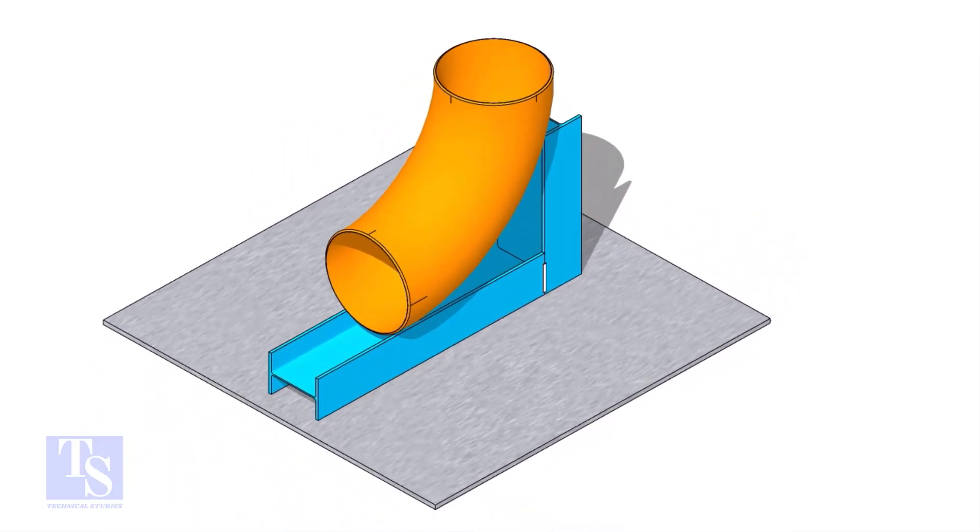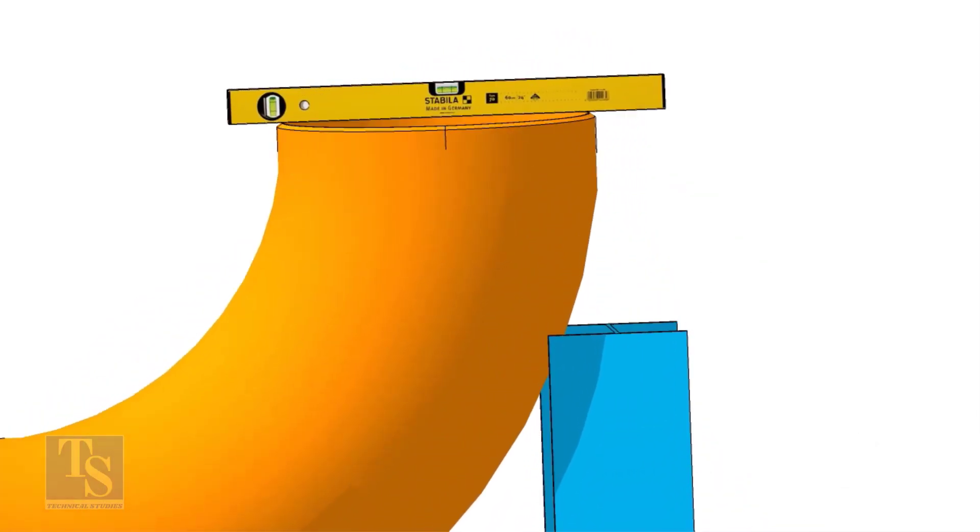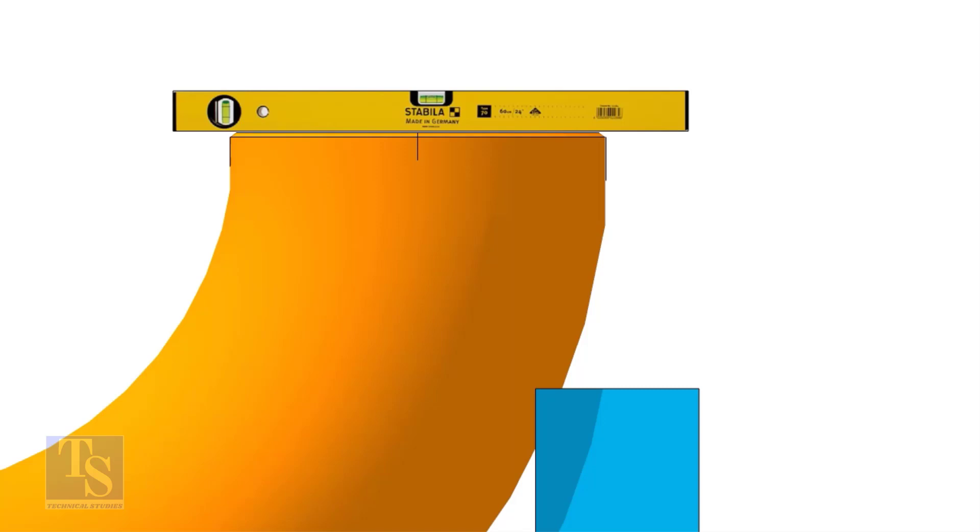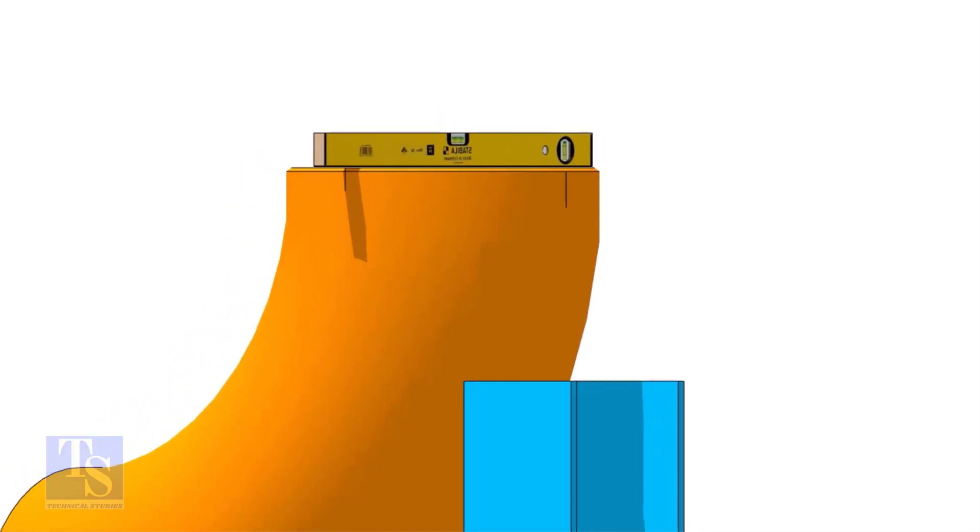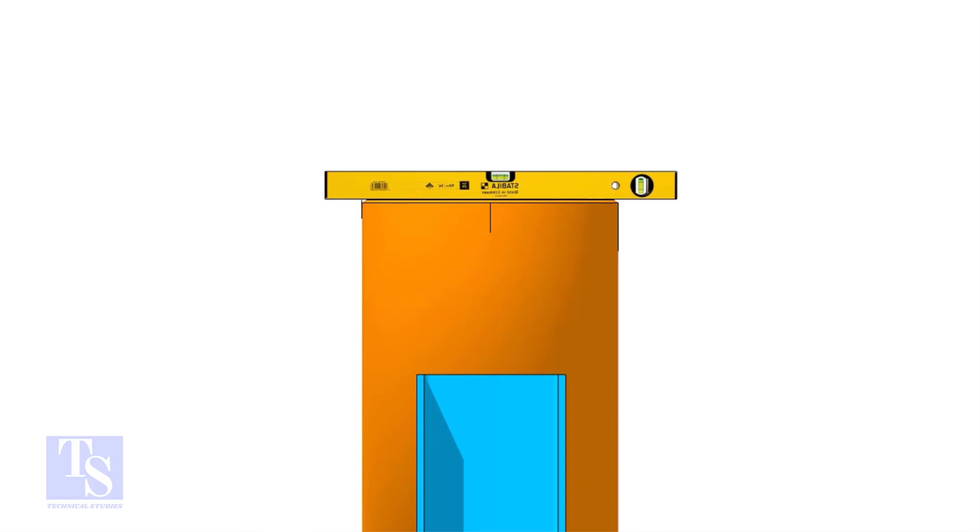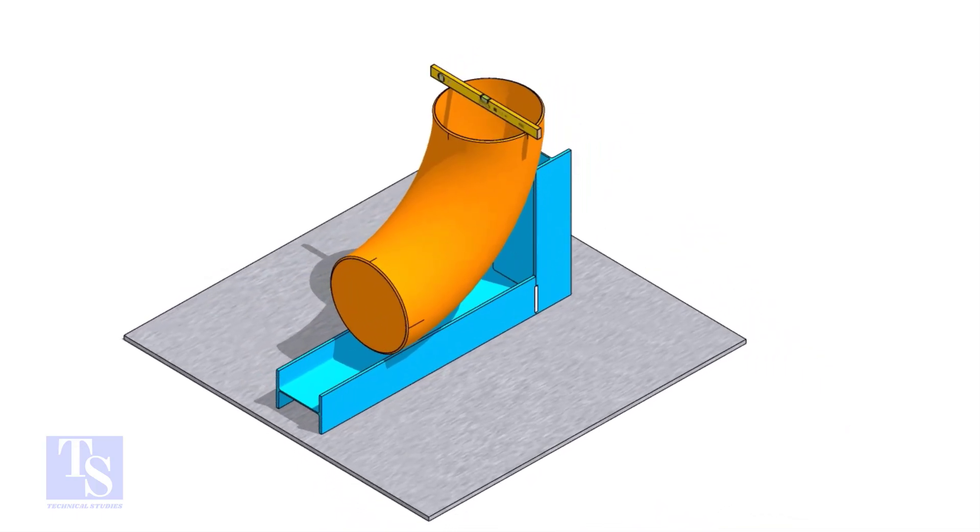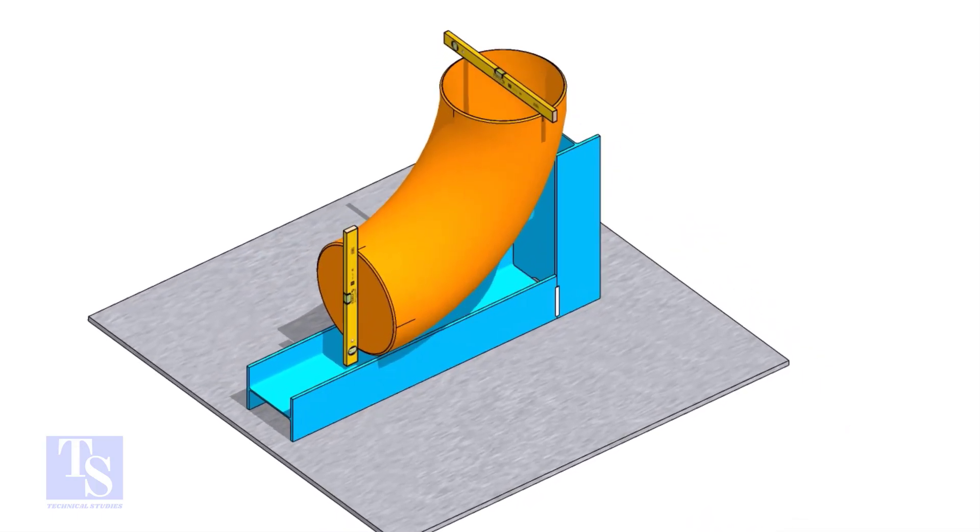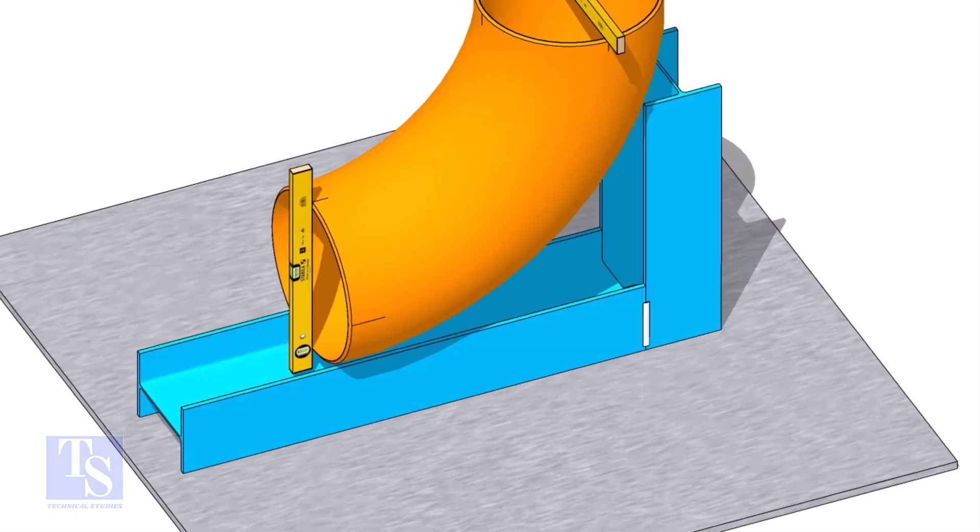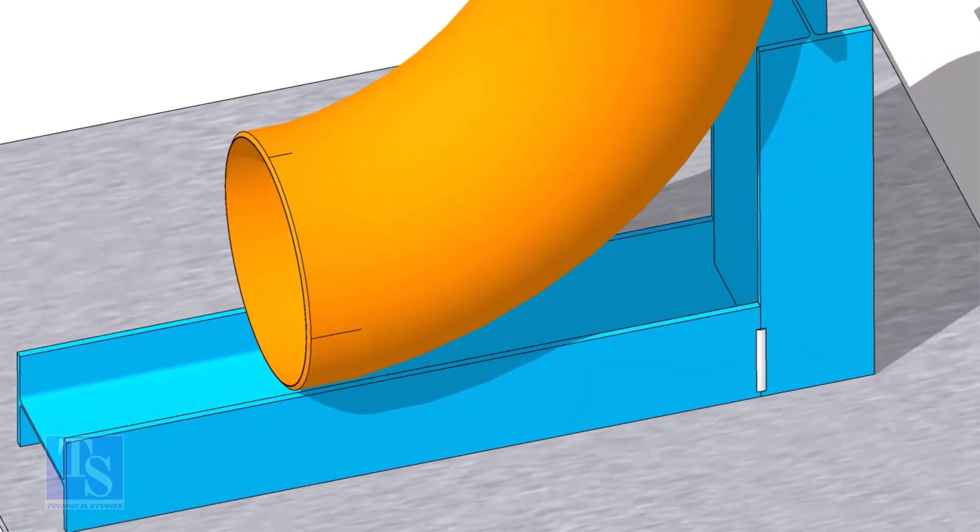Put the elbow in the stand as shown and correct the level. After leveling, tack weld two number clates to stop the elbow from sliding down.